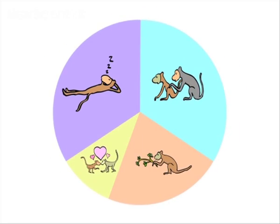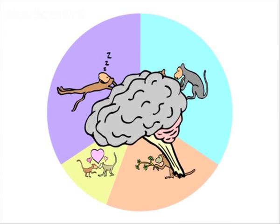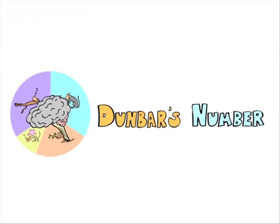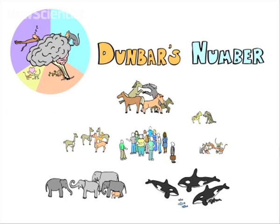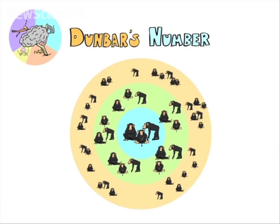But there's only so much time in the day, and that, plus brain size, puts a limit on how many friends an individual can have. This is known as Dunbar's number, and it's a way to predict how big a natural group of animals will be. For chimps, it's about 50. For humans, it's more like 150.